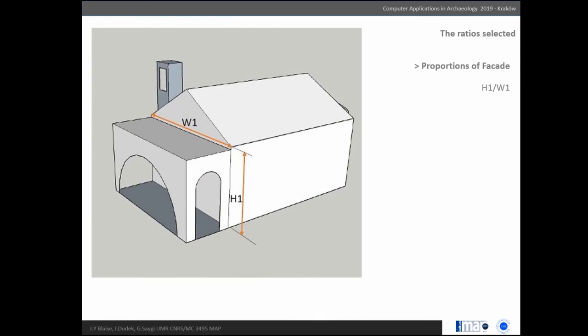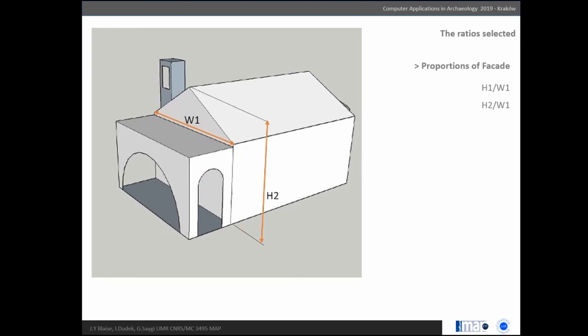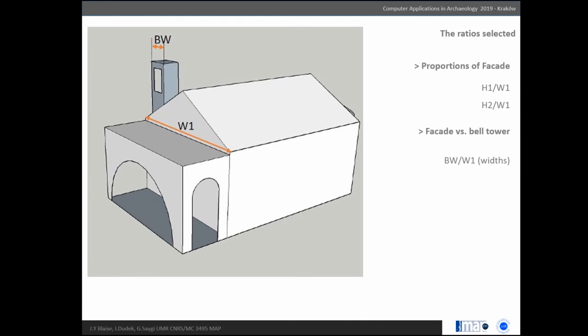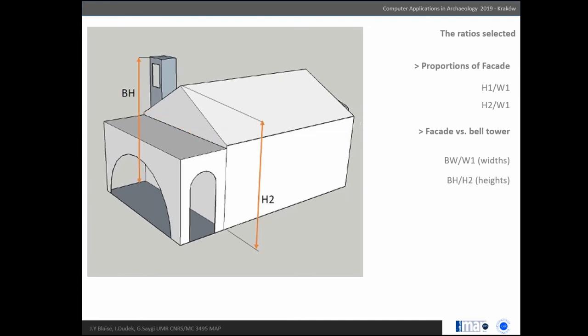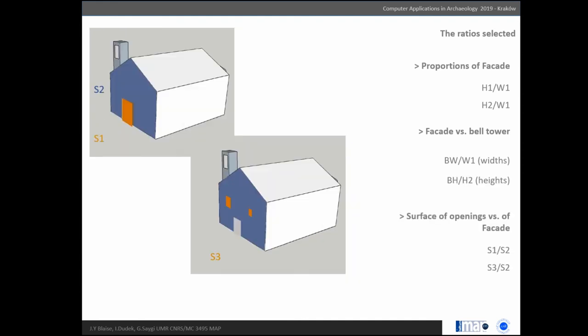Let's look at what ratios we selected for this attempt: proportions of the facade, width versus height; facade versus bell tower in width and height; and surfaces of openings versus the facade.